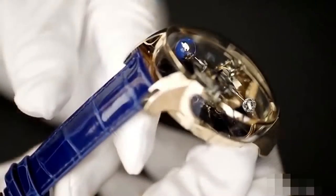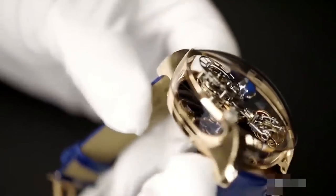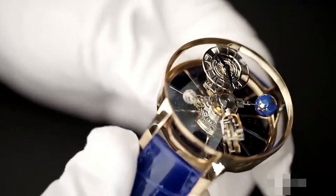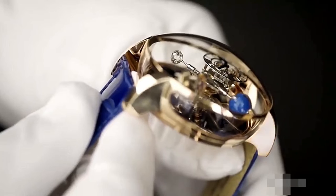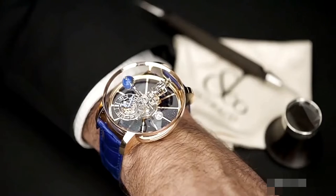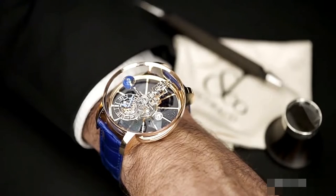For a full view of the stunning Jacob & Co. Astronomia tourbillon miniature universe, the rose gold case is protected by sapphire crystal on all sides. With this beauty, you'll always have the mysteries of time and space close at hand.